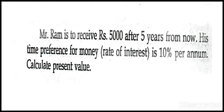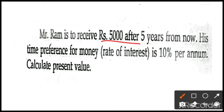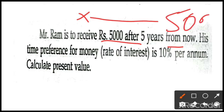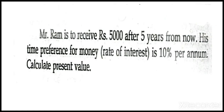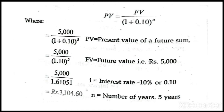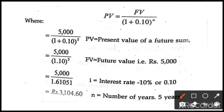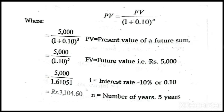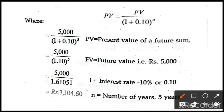Let us discuss one more problem. Mr. Ram will receive 5000 rupees after five years from now. If he invests an amount X today, after five years he will receive 5000 rupees at the rate of 10 percent. We need to find out how much he has to invest today. The given information is: future value is 5000 rupees, rate of interest is 10 percent, and number of years is 5.